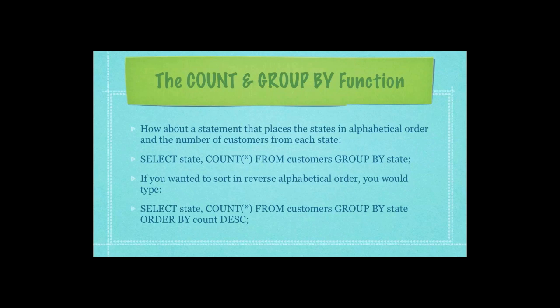To place states in alphabetical order along with the number of customers from each state, use the SELECT statement calling for the state value followed by the COUNT function from the table customers, then grouping everything in alphabetical order by state. If you wanted to sort in reverse alphabetical order, simply type in the DESC value after your order by.